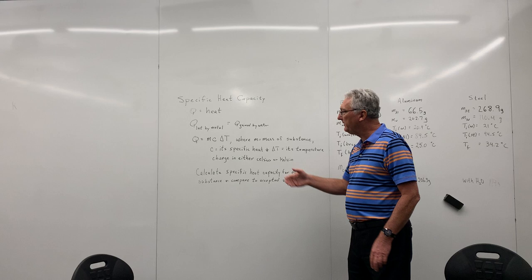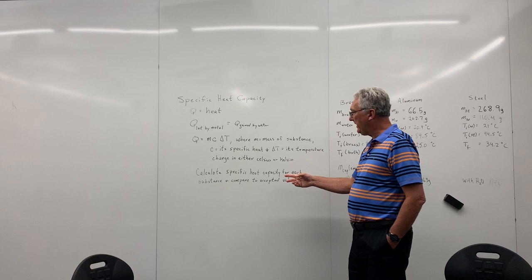So there's going to be a change in temperature of both. Since the metal is losing energy, its temperature is going to go down. Since the water is gaining energy, its temperature is going to go up. And that heat is equal to the mass of whichever substance we're talking about, times that substance's specific heat, times the change in temperature. And so what we're going to do here is we're going to do three different metals. And you're going to calculate the specific heat capacity of each, and then compare it to the accepted value.